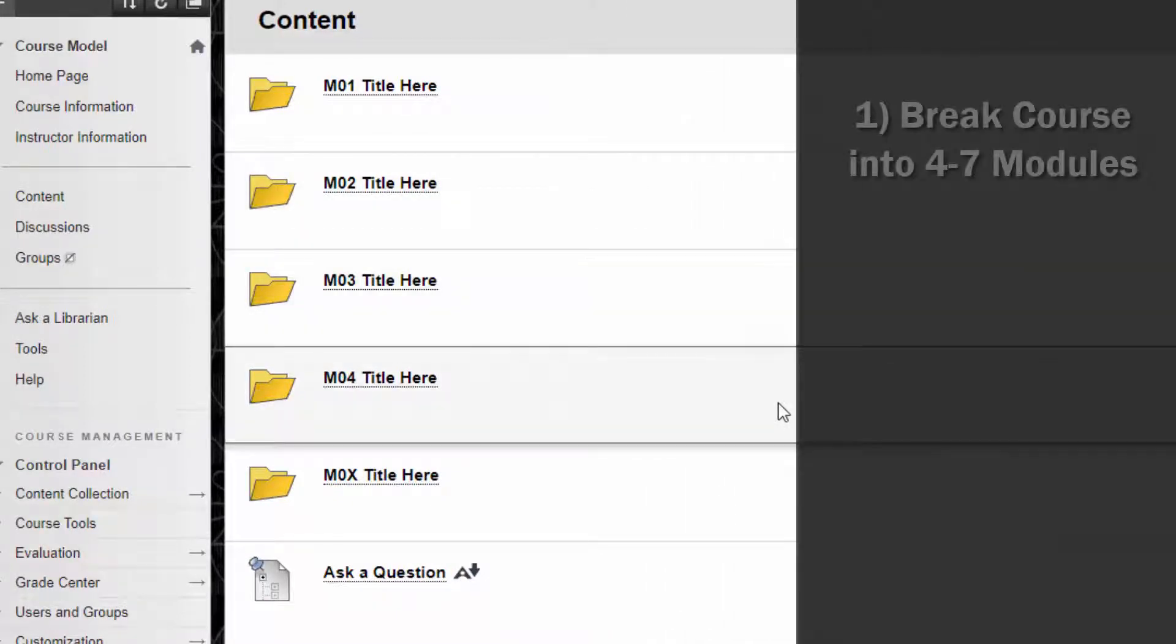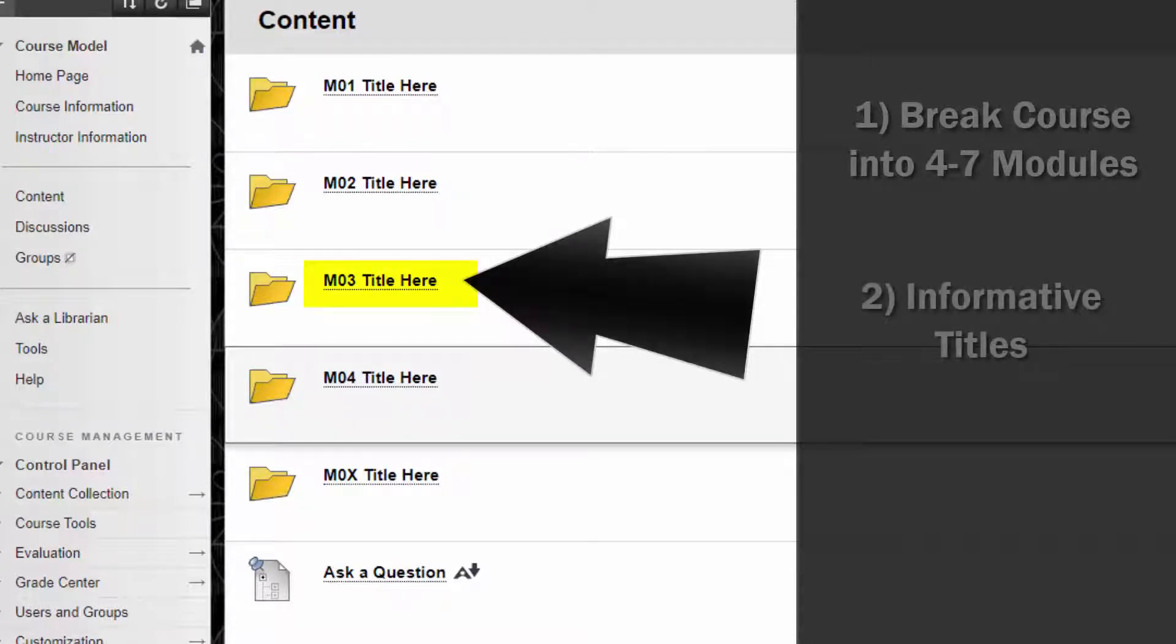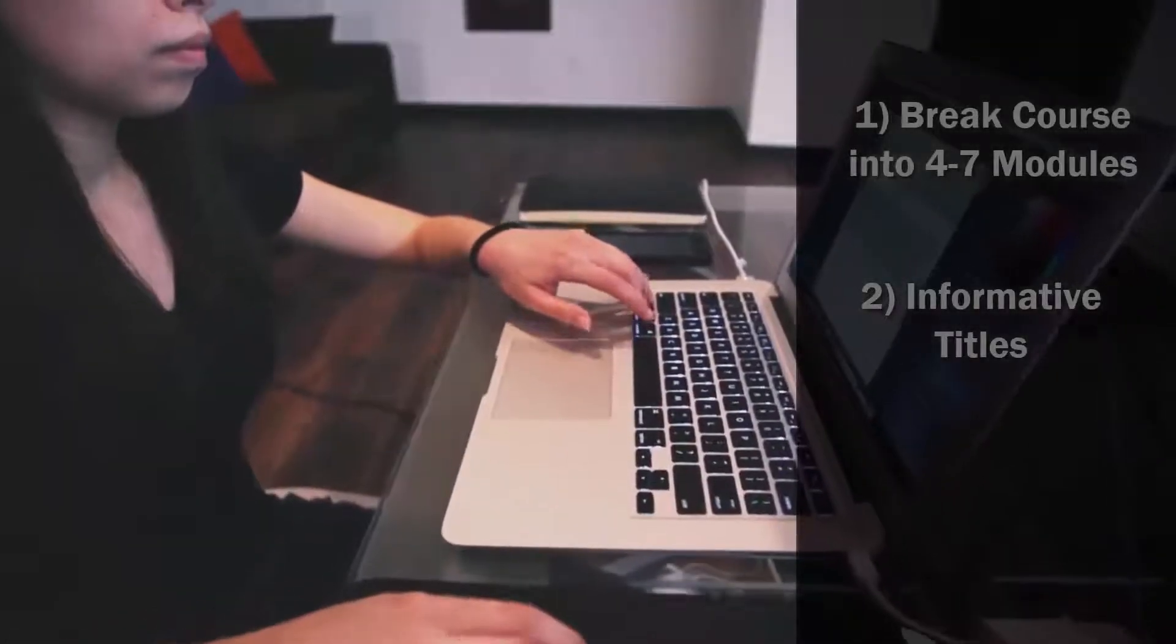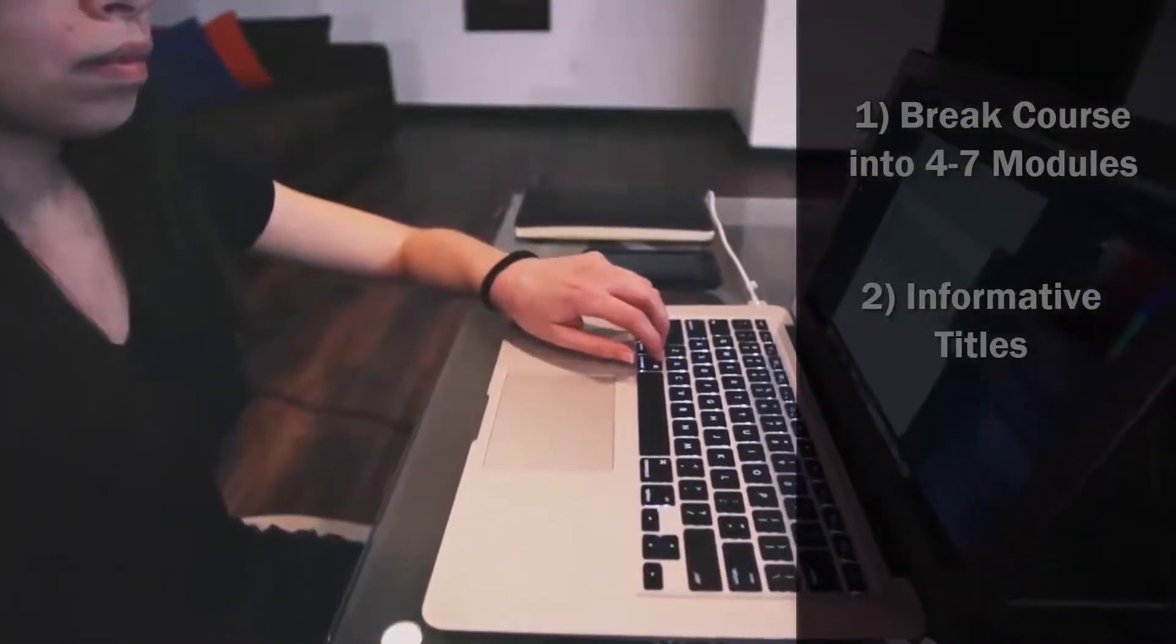If you follow these rules and break the course down into a set of four to seven functional units, that is, modules, that have informative titles, the course will be reinforcing an understanding of the course content through the student's passive perception and time spent in the course.